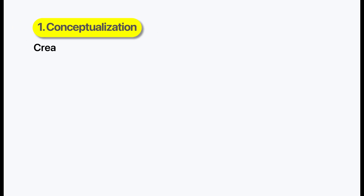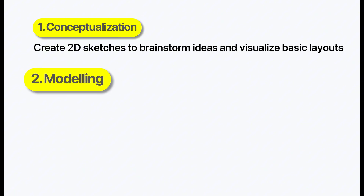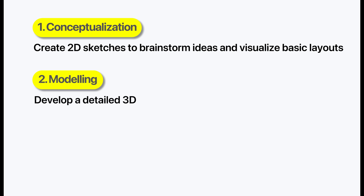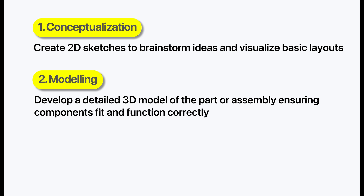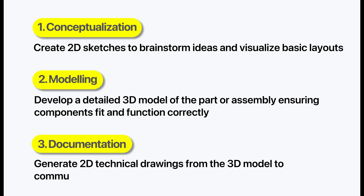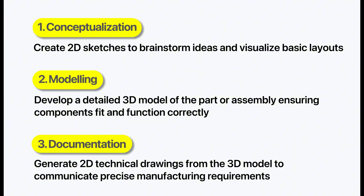This additional data is why 3D CAD software requires more computing power. 2D and 3D CAD can actually complement each other in mechanical engineering workflows. A typical project might follow this process: first, the concept phase, where you create 2D sketches to brainstorm ideas and visualize basic layouts; second, the modeling phase, developing a detailed 3D model of the part or assembly ensuring all components fit and function correctly; third, the documentation phase, generating 2D technical drawings from the 3D model to communicate precise manufacturing requirements.